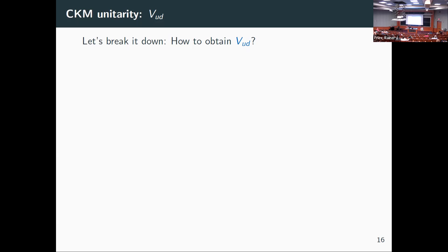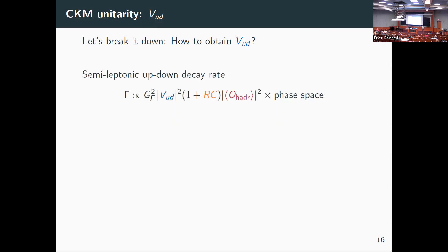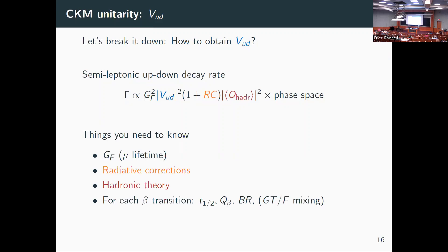How do we actually get Vud? For any semi-leptonic process — where the final state has leptons precipitated by an up-down weak current — the decay rate always follows the same formula: big Gamma goes according to a coupling constant, the matrix element we care about, phase space from kinematics, and a hadronic matrix element — the overlap of initial and final states. Experimentally, we need G_Fermi (known very precisely from the muon lifetime, better than 10^-4), theoretical radiative corrections, hadronic theory, and for each transition: the half-life, Q-value, and branching ratio.